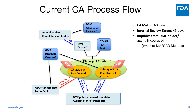As of October 1, 2012, type 2 API DMFs must undergo CA under GDUFA. The FDA committed to complete the initial CA review for 90% of type 2 API DMFs within 60 days of the later date of DMF submission or DMF fee payment. The internally targeted goal is 45 days.